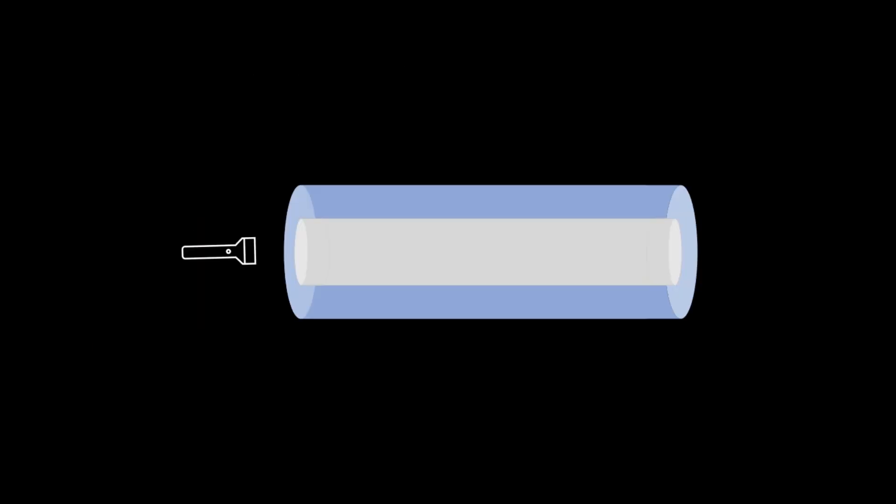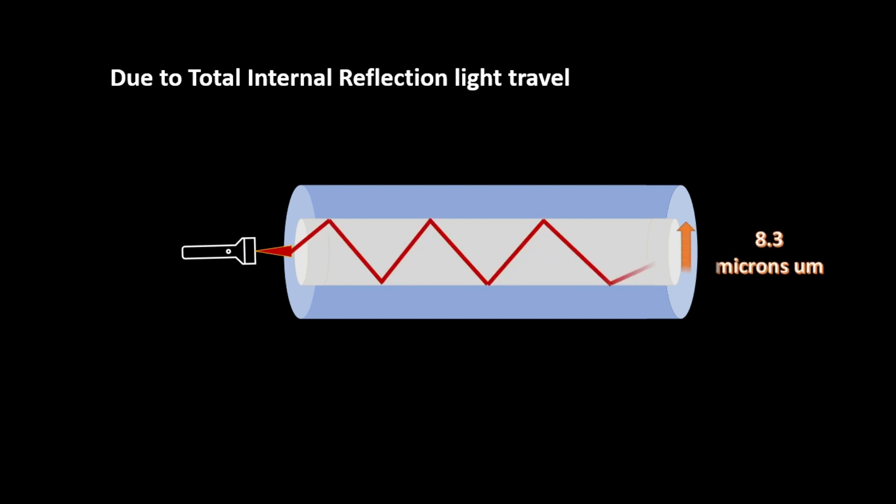Using total internal reflection, light travels in the fiber core. The core diameter is just as it says - the diameter of the fiber core, which is typically 8.3 microns for single mode fiber.